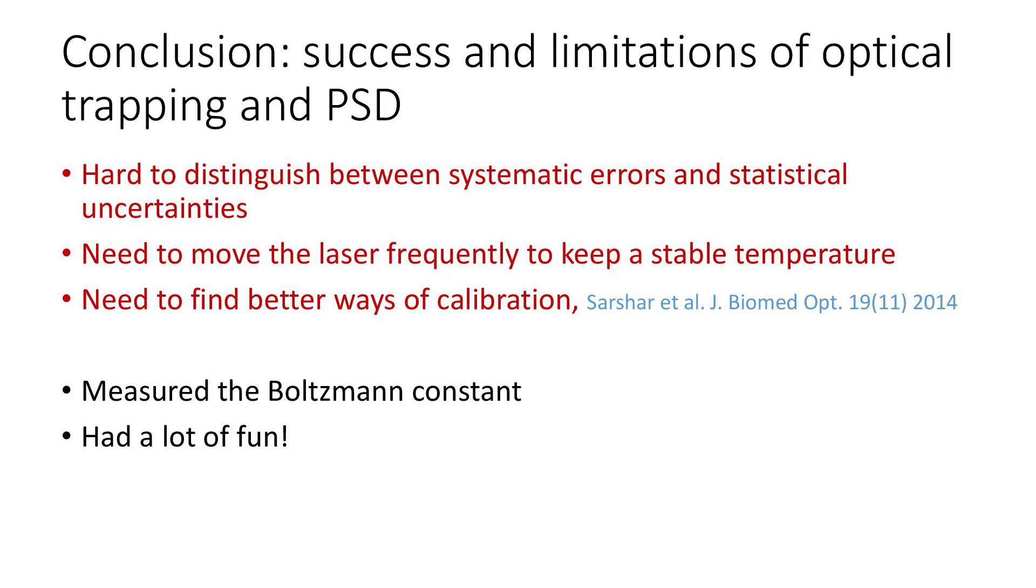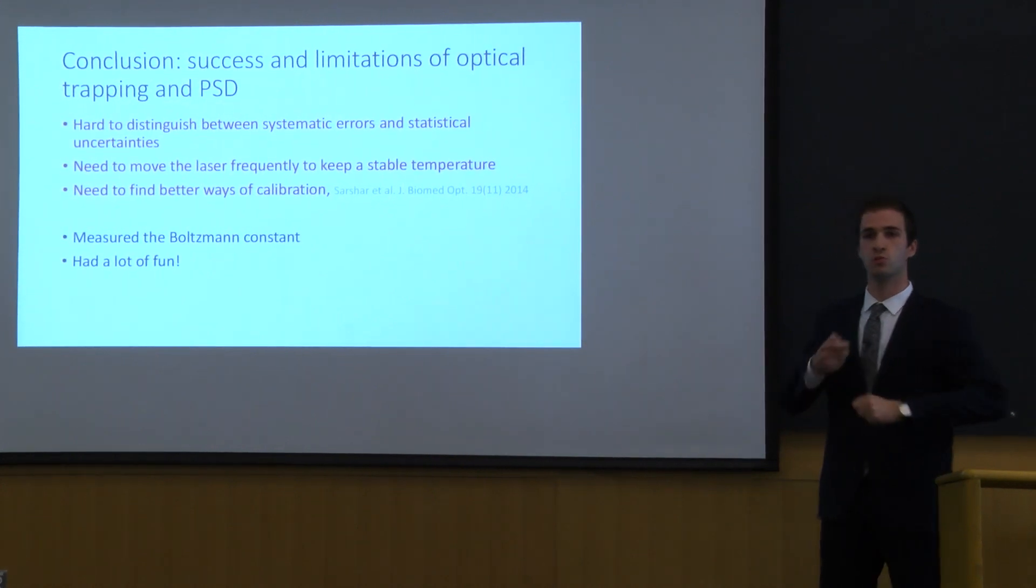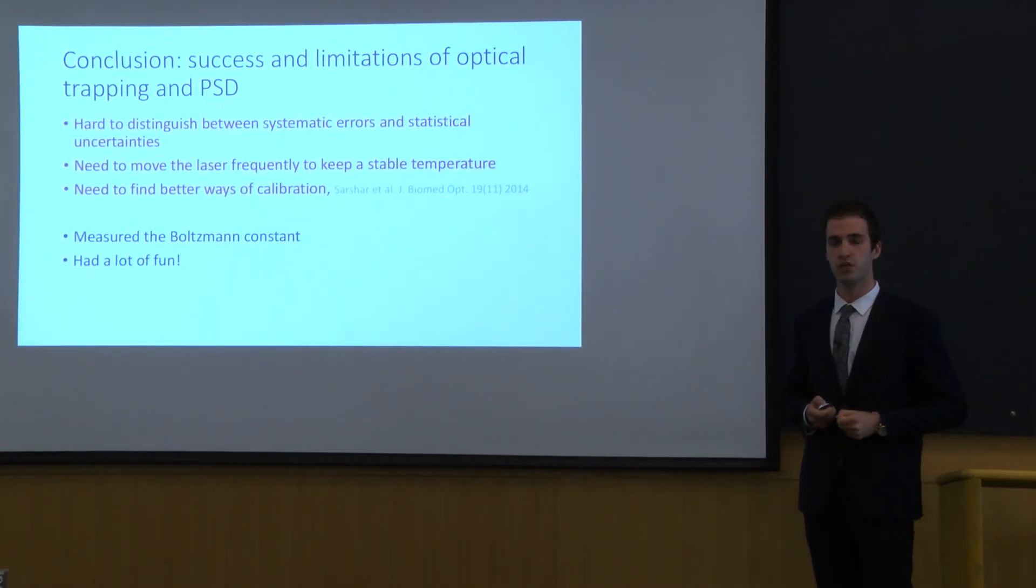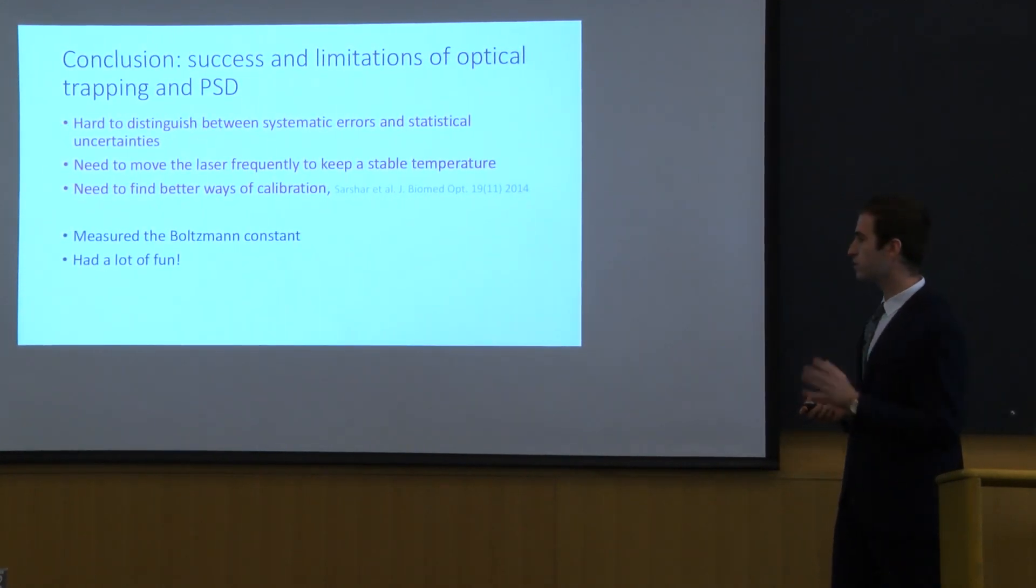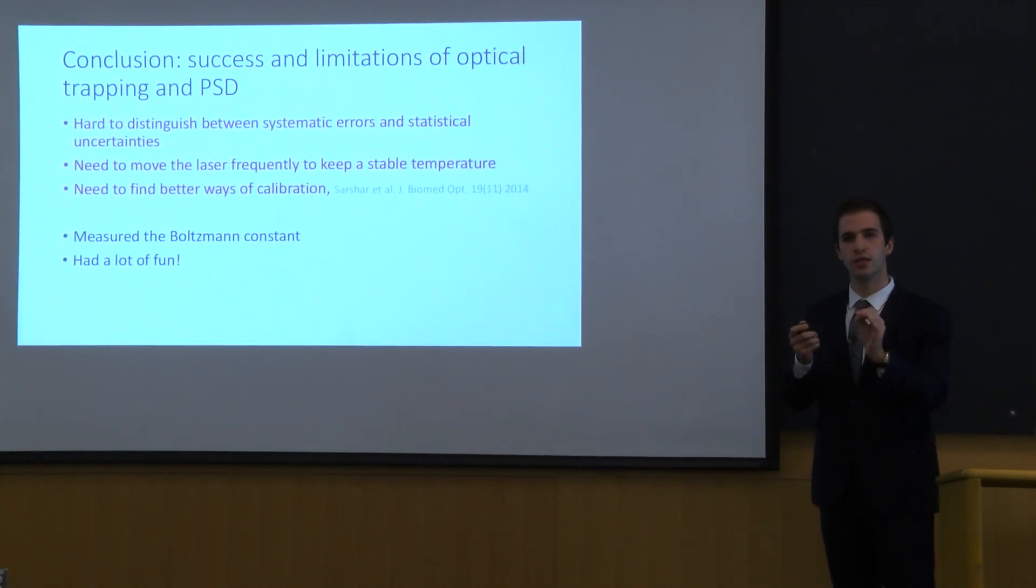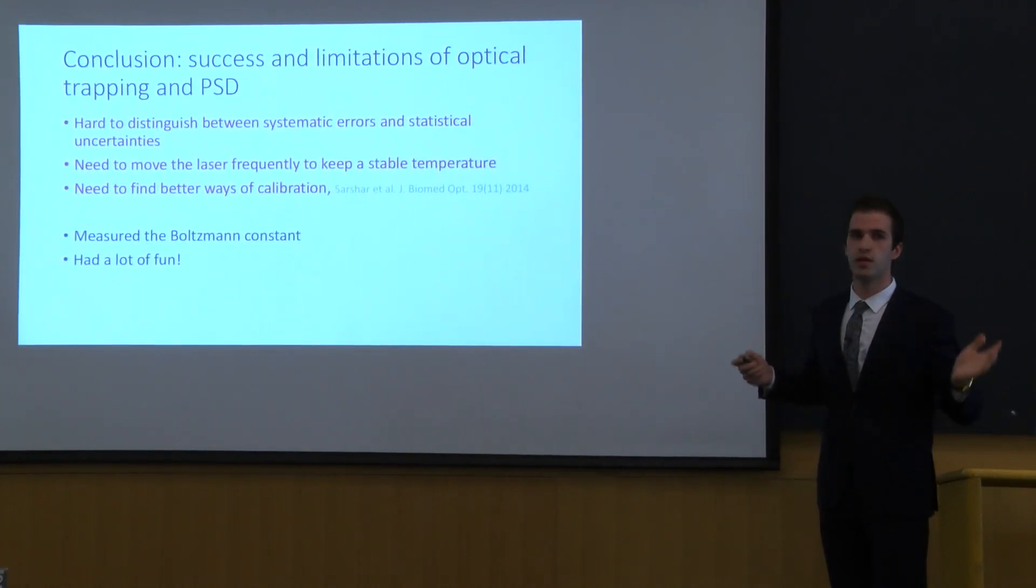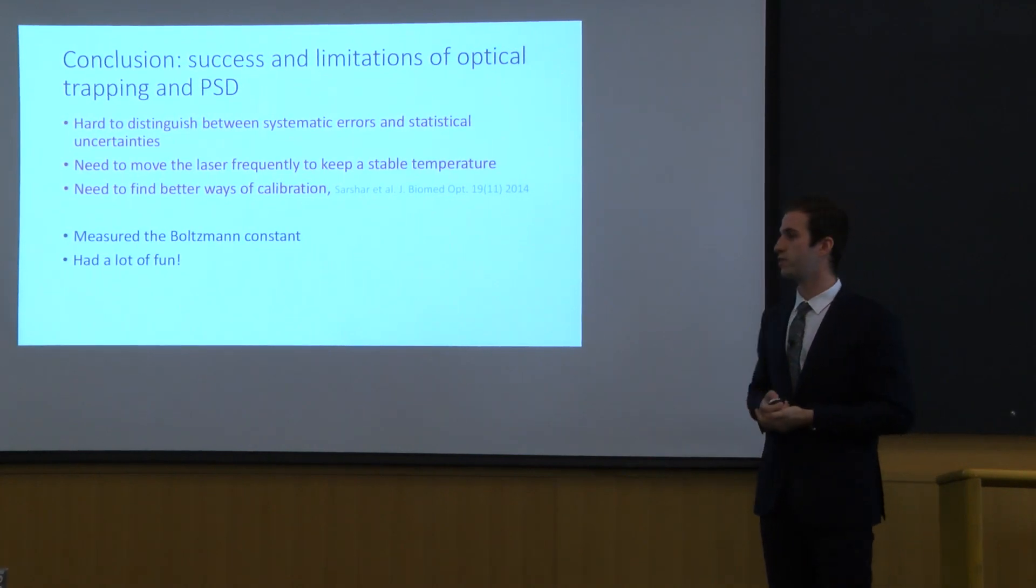In conclusion I'll start with the limitations. As you saw it's very hard to distinguish between systematic errors and statistical uncertainties. The reason for this is as you saw is that we are fighting with the systematics by introducing more statistics and everything mixes up in the propagation of errors. The second thing that is very difficult in this lab is that we need to move the laser constantly. So one of the people working on this lab has to keep track of where the laser is and whether you're trapping things that you may not want to trap. The third thing is the need to find better ways of calibration.